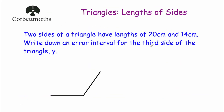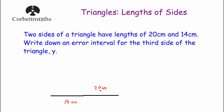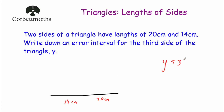The last question says: two sides of a triangle have lengths of 20cm and 14cm. Write down an error interval for the third side. Let's consider the largest possible length for the third side. If we increase the angle between the 20cm and 14cm lines to just before a straight line, it would give a third side of 34cm — but that's not a triangle. So the third side y must be less than 34cm.